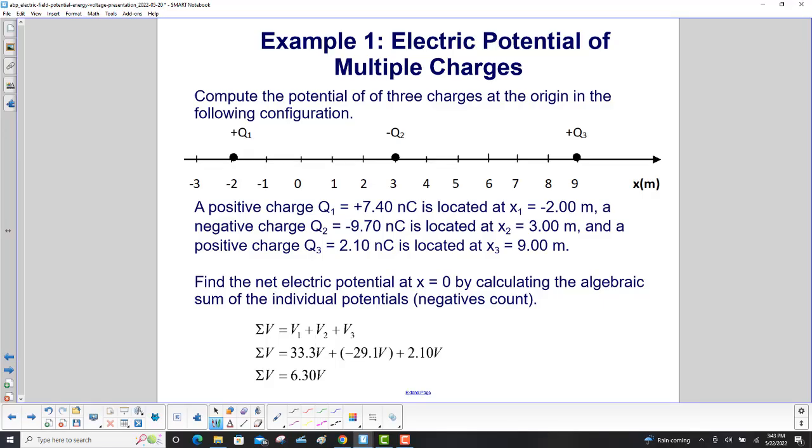Finally, we find the net electric potential at x equals zero by calculating the algebraic sum of the individual potentials. Negatives count. The sum of the voltage equals V1 plus V2 plus V3. Add them all together, and we get the voltage right there is 6.30 volts.